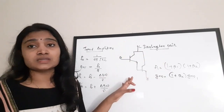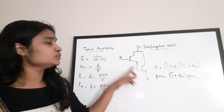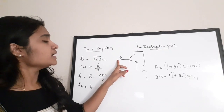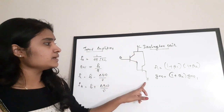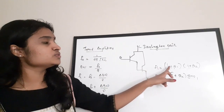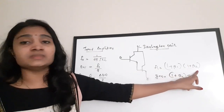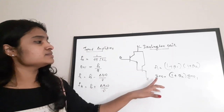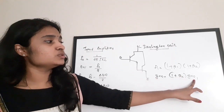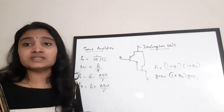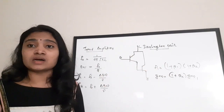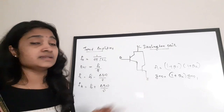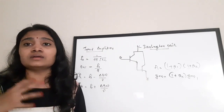The Darlington pair is formed by connecting two BJTs together. The total current gain β = (1 + β1) × (1 + β2), where β1 and β2 are the individual transistor gains. The transconductance gm = (1 + β2) × gm1, where gm1 is the transconductance of the first transistor. The Darlington pair has a base, collector, and emitter connected in a specific configuration.